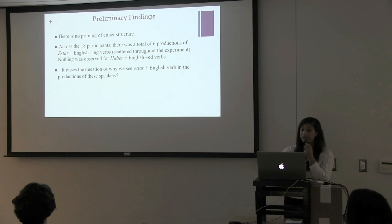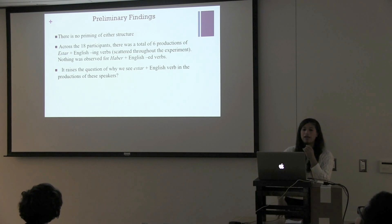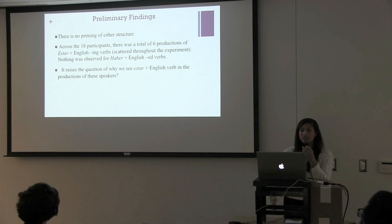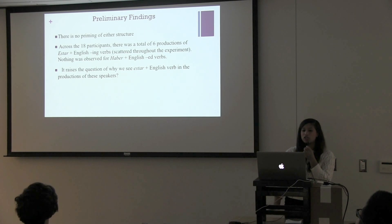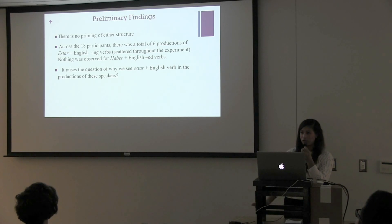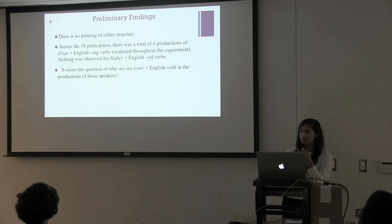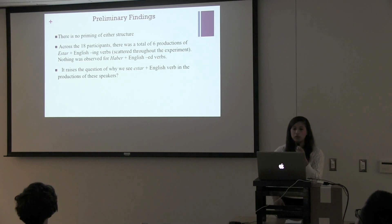I do not have concrete data right now because I want to compare the Granada group to the U.S. group, but I have preliminary findings. There is no priming of either structure. I have 18 very highly proficient bilinguals from Granada, and we found no priming in them. Across the 18 participants, there was a total of six productions of 'V-estar' plus English ING verbs, and they were scattered throughout — different participants said these, not just one participant producing all six types of code switches.